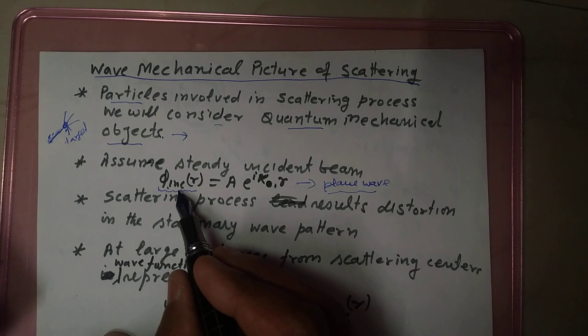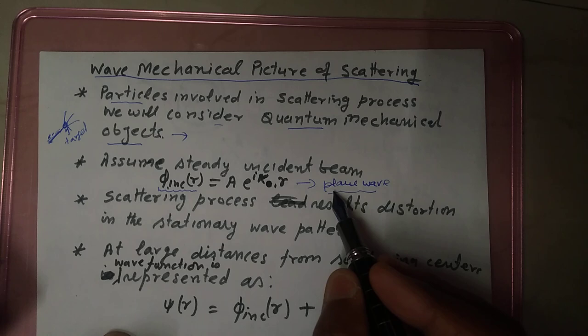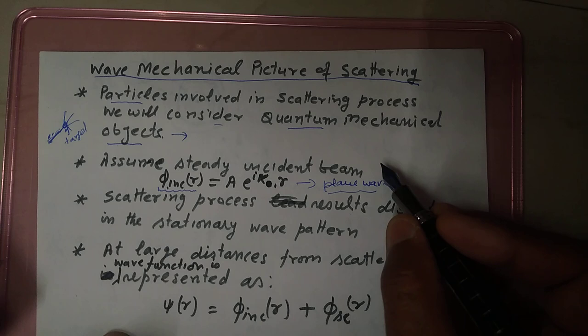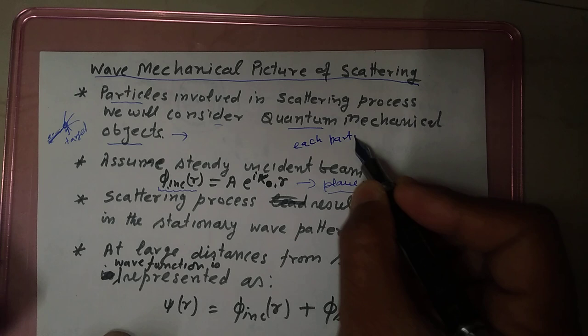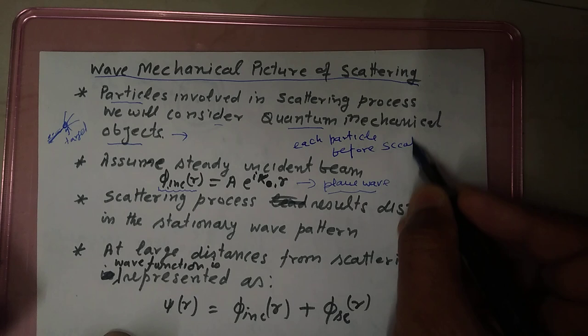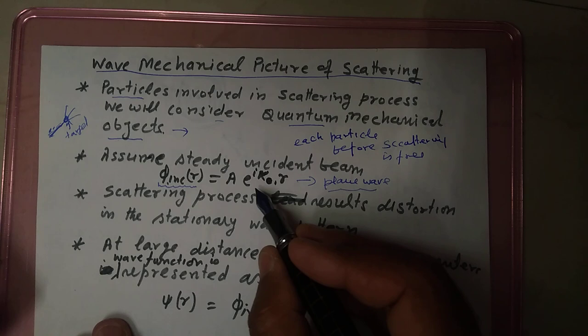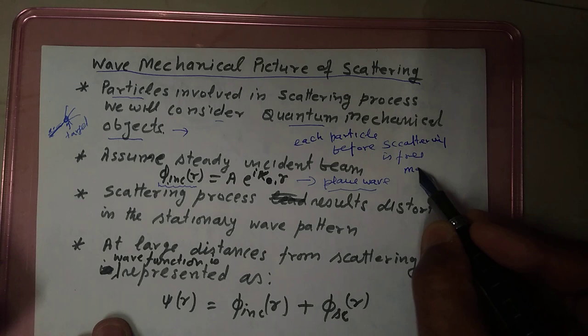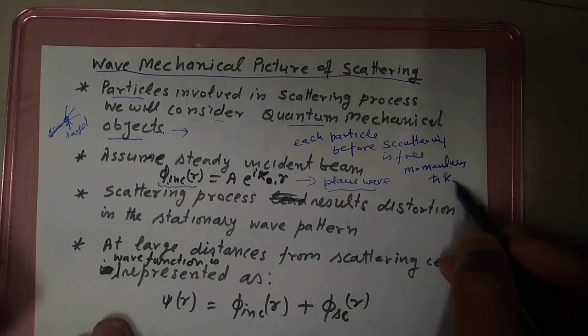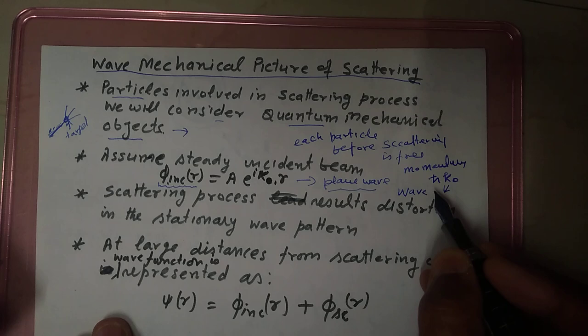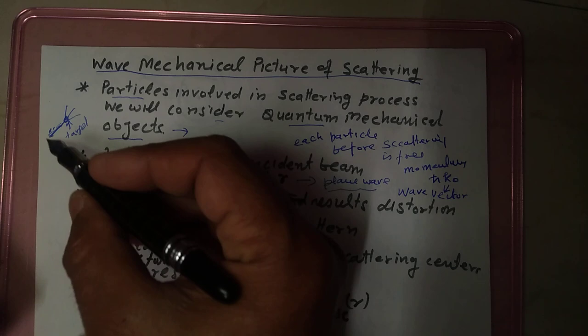Because it is a quantum mechanical object, we can express it with this. Each particle before scattering is free. We can consider that each particle is free before the scattering. And this momentum — each particle has momentum ℏK₀, where K₀ is the wave vector.